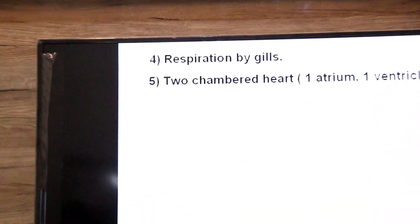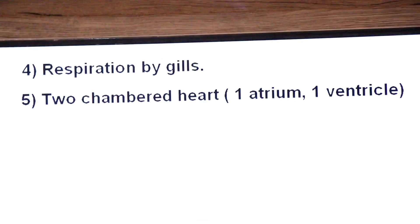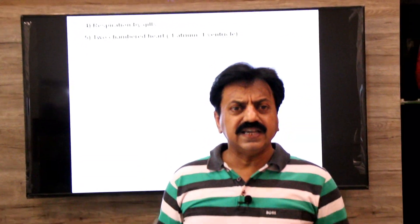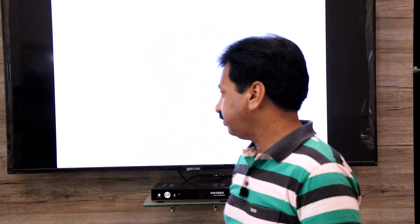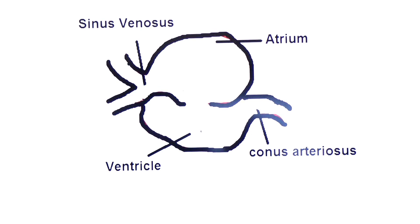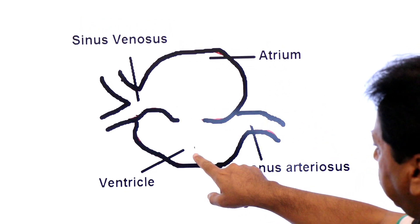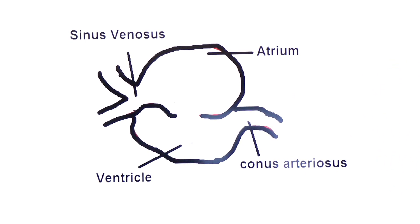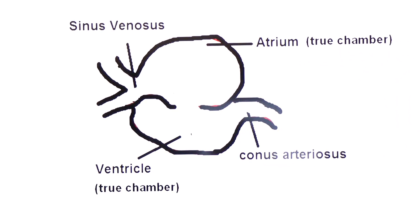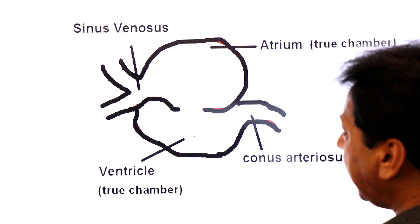Respiration is by gills. The heart is two-chambered, having one atrium and one ventricle. In fishes, the heart has two chambers and their circulation is called single circuit plan. Here you see the diagram showing the heart of a fish: the upper chamber is the atrium and the lower chamber is the ventricle. These are the true chambers of the heart.